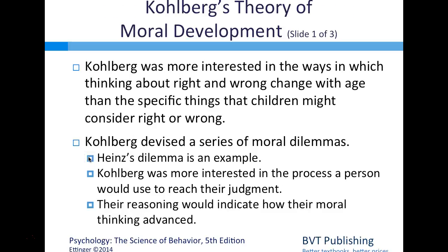We'll focus mainly on Kohlberg's theory of moral development. Kohlberg was more interested in how thinking about right and wrong changes with age than in the specific things children consider right or wrong—thinking abstractly about the process rather than the actual right or wrong of a situation. He devised a series of moral dilemmas; Heinz's dilemma is a key example.